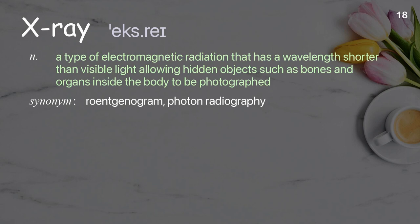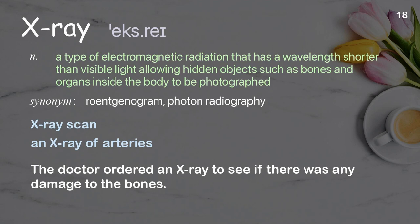X-ray. A type of electromagnetic radiation that has a wavelength shorter than visible light, allowing hidden objects such as bones and organs inside the body to be photographed. Examples: x-ray scan, an x-ray of arteries. The doctor ordered an x-ray to see if there was any damage to the bones.